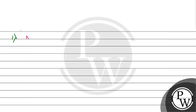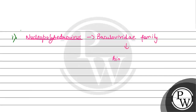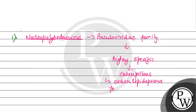The virus called Nucleopolyhedroviruses — if we talk about their targets, they are highly specific. Their specific particular target is caterpillars. Caterpillars belong to order Lepidoptera, and the phylum is Arthropoda. So the order is Lepidoptera and the phylum is Arthropoda.